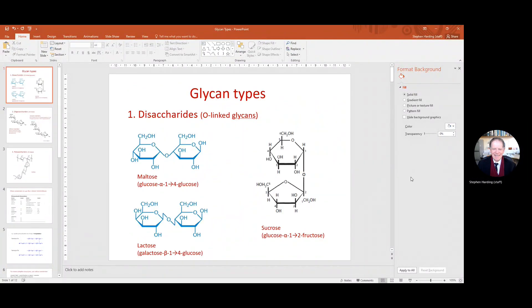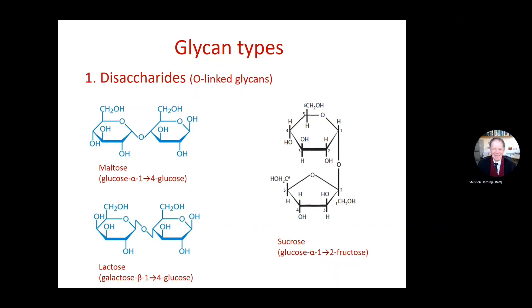Okay, glycans. Right, so glycan types, let's go to mode. Let's start right at the start. Glycans are compounds which have one or more sugar residues in them and hence involve what we call a glycosidic bond.